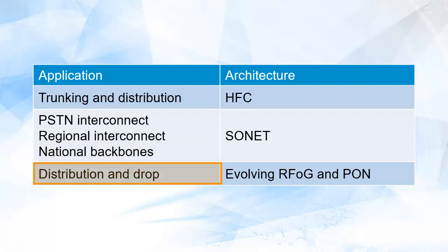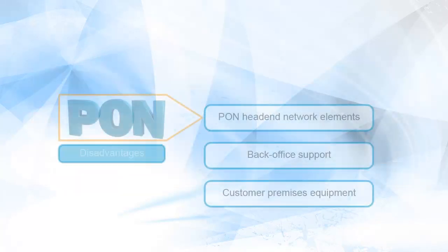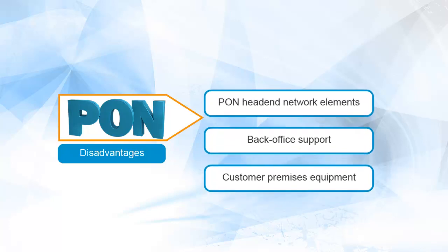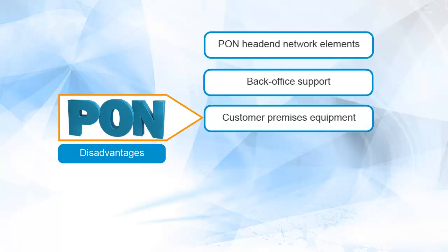Distribution and drop remains the last area to be converted to fiber. Some versions of passive optical networking or PON technology are removing the need for expensive amplifiers and regenerators, making fiber an economically viable medium for business data access and new residential access plant. However, the chief disadvantage of PON in a cable system is that the PON head end network elements, back office support, and customer premises equipment are different from and incompatible with the DOCSIS-based system developed for cable's HFC architecture.